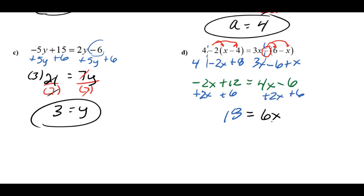And then finally, we'll cancel off that factor of 6. And when I cancel, 18 divided by 6 is 3. So 3 equals x.